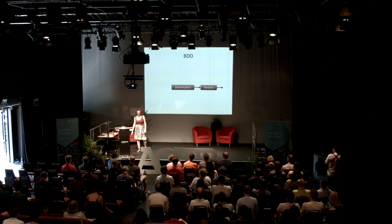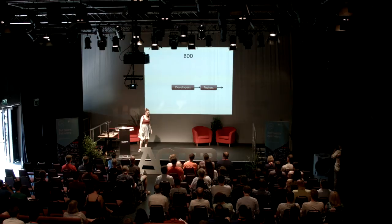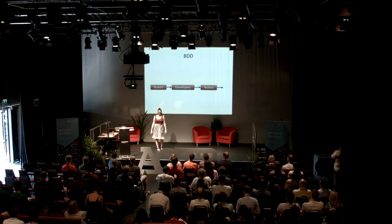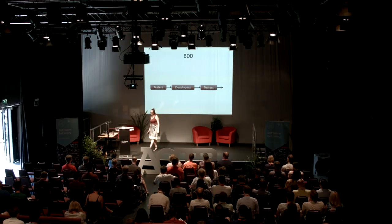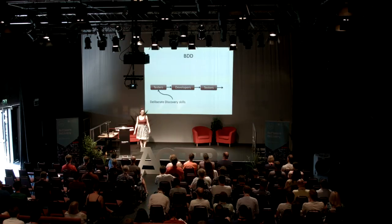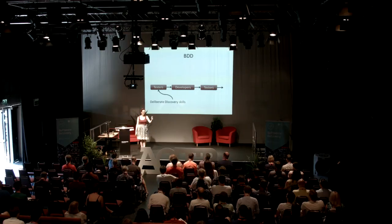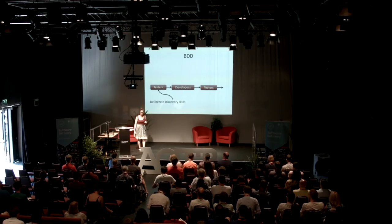So what we do instead with BDD: we get the testers involved first. The testers are perfectly capable of telling us how they're going to discover what's wrong with our code. And if we're cunning and we ask them to apply those deliberate discovery skills early — 'can you think of any scenarios we've missed? Can you think of anything we haven't considered?' — the testers go: 'yeah, you're going to miss this, this, this, this, and this.' And then we stand a much better chance of getting it right.